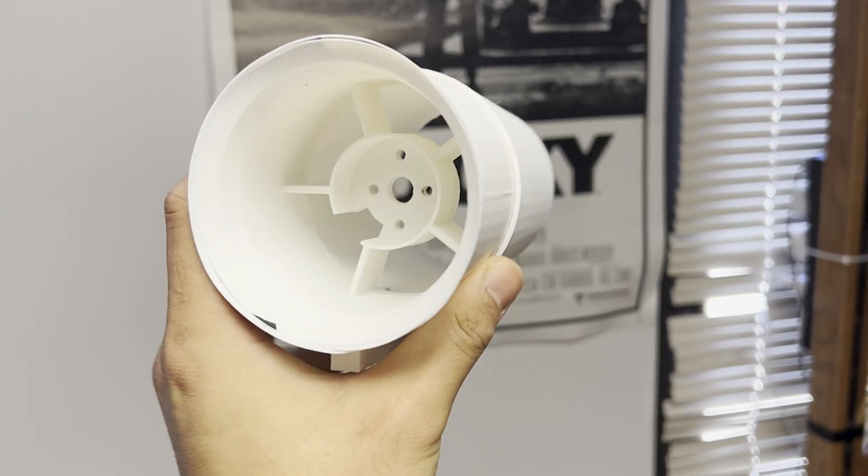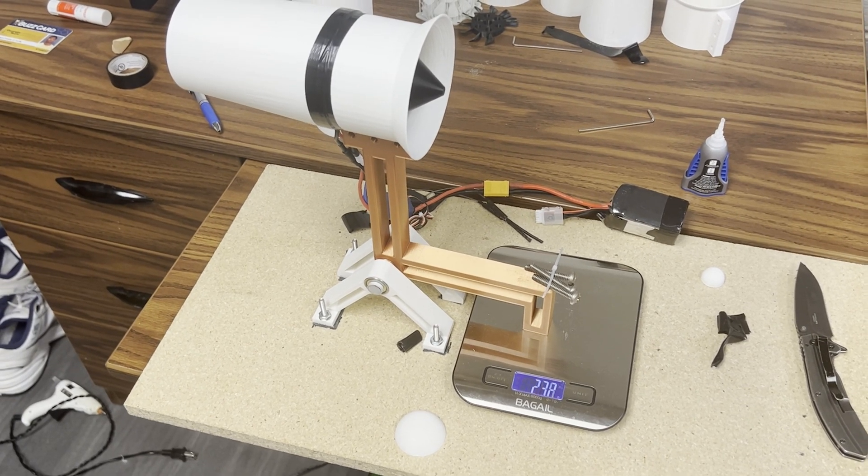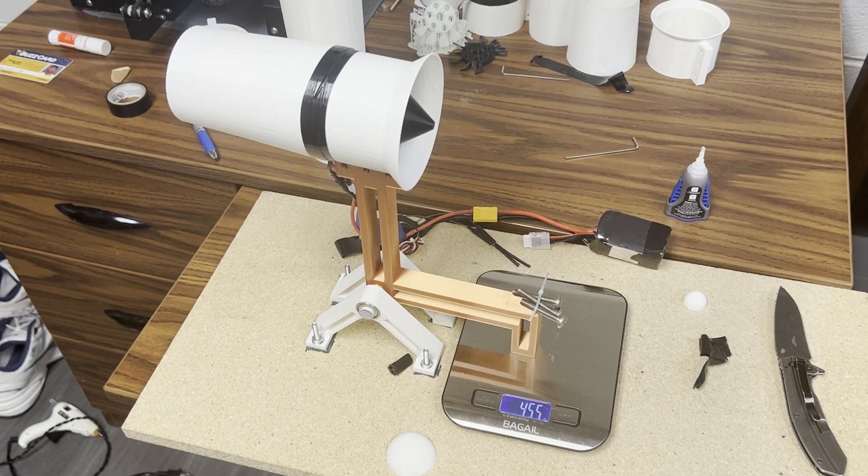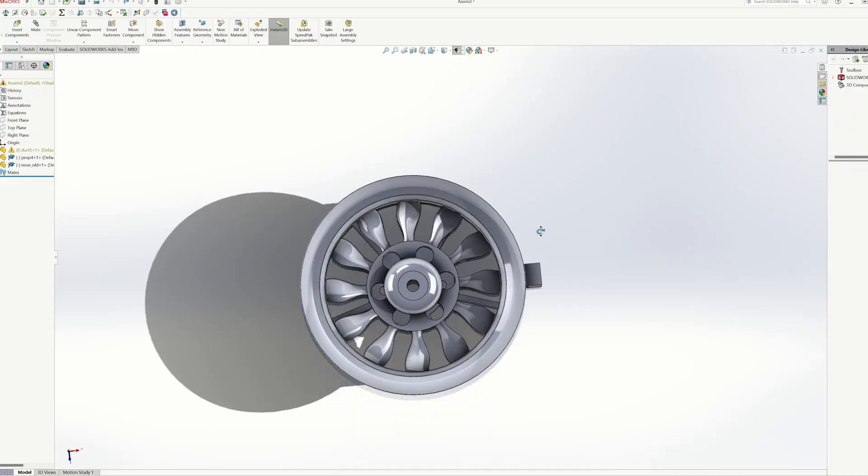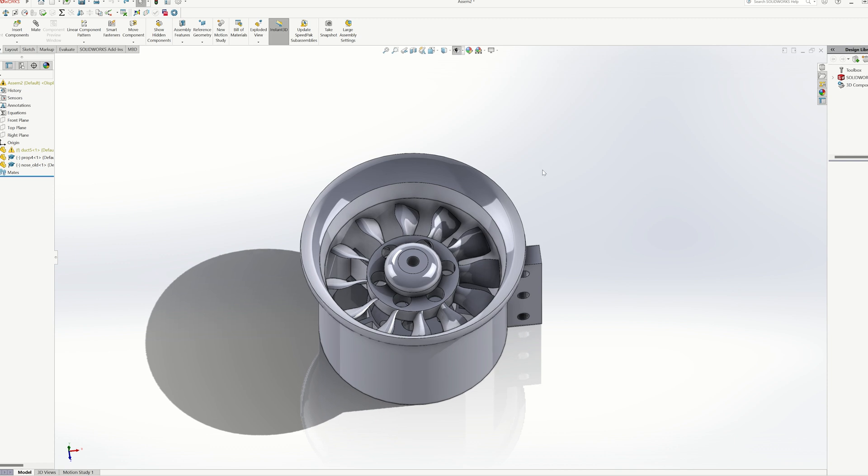So I've actually done a ton of 3D printed EDF projects in the past. I was able to test almost half a kilogram of thrust on a homemade thrust stand using FDM printers only. I was printing out of PLA and PLA Plus for these. So since I had a bunch of these already designed, my main focus was coming up with this coaxial gearbox.